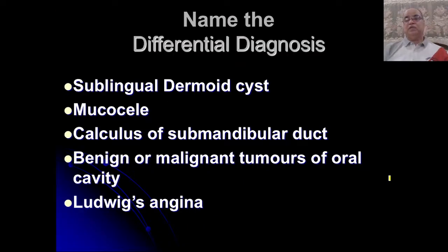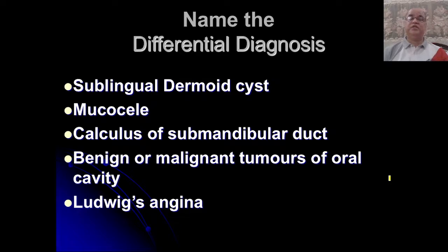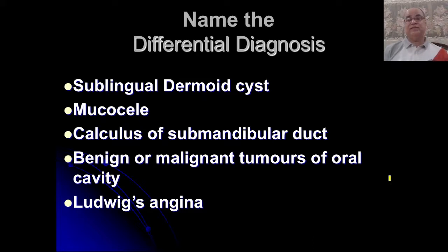For differential diagnosis, the closest contestant is dermoid cyst, which always occurs in the midline and appears whitish on inspection, whereas ranula is away from the midline with a frog belly or bluish discoloration. Mucocele is a mucus retention cyst — its most common site in the oral cavity is the inner aspect of the lower lip, but it can also occur at the floor of the mouth and on the tongue.